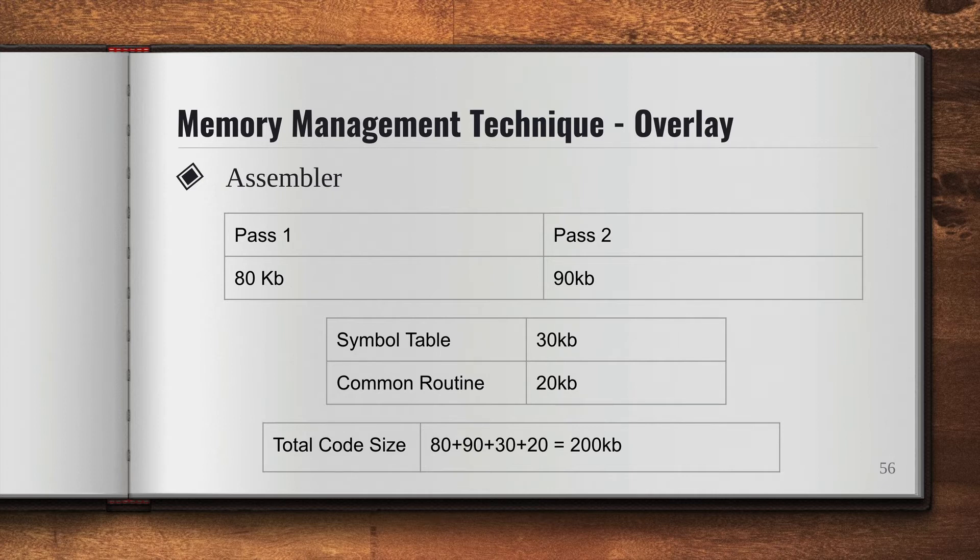If we try to run both of them together, and our main memory size is only 150 KB, there is no way we will be able to accommodate that. What's the solution? This is where the overlay concept is useful. Overlay says do not bring the entire program at once in the main memory - bring it in parts as and when you need it. When pass one is needed, bring pass one, then take it out once it's finished executing, and then bring pass two. Bring only one at a time, not together.